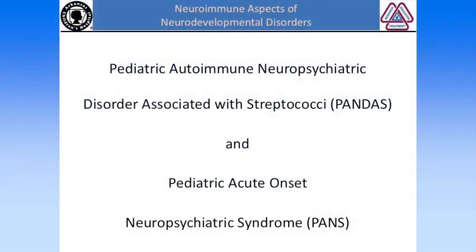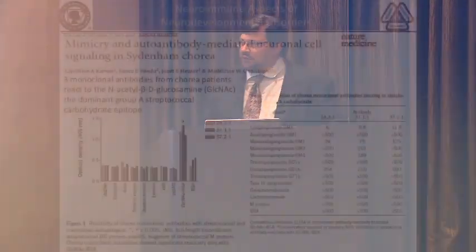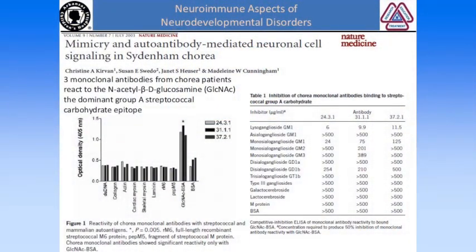Another very important growing area in neurodevelopmental disorders related to immune dysfunction is pediatric autoimmune neuropsychiatric disorder associated with streptococcal infection — PANDAS — and more recently, pediatric acute onset neuropsychiatric syndrome, or PANS. Dr. Cunningham discovered the antibodies underlying this in an elegant manner.